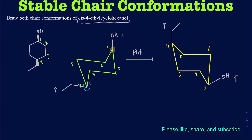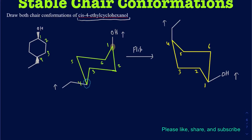Now I have both structures drawn. The question is: which one is more stable? The answer is whichever structure has more substituents on the equatorial position. But it turns out I have the OH on axial and ethyl on equatorial in the first conformation, and in the second conformation the OH is equatorial and the ethyl is axial. So when you have the same number of groups on equatorial and axial among the conformations, you look for the biggest group — it needs to be on the equatorial position.